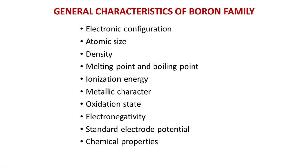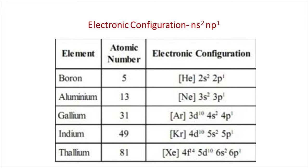The general outer electronic configuration of Group 13 elements is ns² np¹. Boron and aluminium have inert gas type configuration in the penultimate shell, whereas gallium, indium, and thallium have pseudo inert gas type configuration. The inert gas electronic configuration means having eight valence electrons. The pseudo inert gas configuration means having 18 electrons instead of eight in the penultimate shell after gaining or losing electrons.